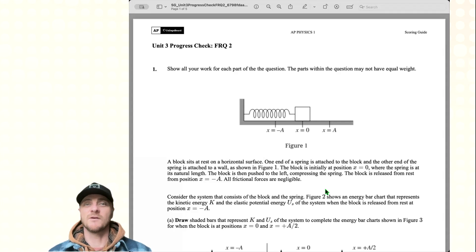Hey, glad you made it. This is Mr. Heinrich. We're looking at another progress check from AP Classroom. This is unit 3 number 2 for AP Physics 1.